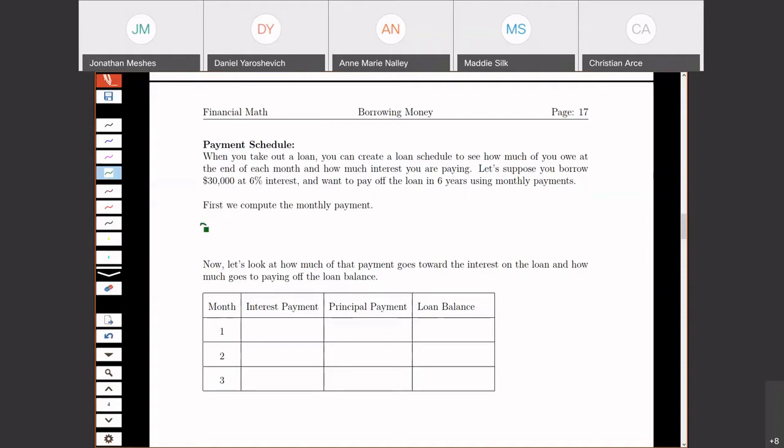So our principal is $30,000. The rate is 0.06. It's in six years. So T is six, monthly payments, so N is 12. So if I use my payment formula.